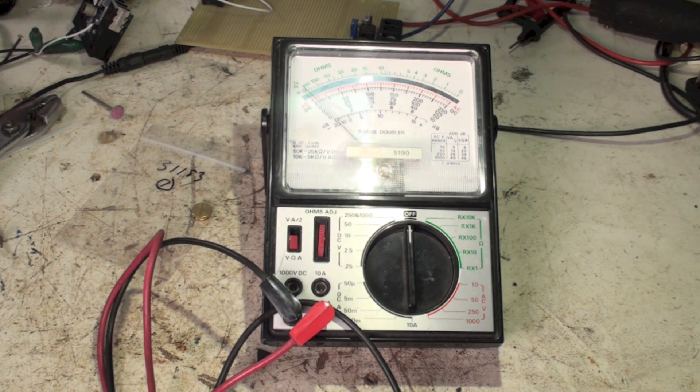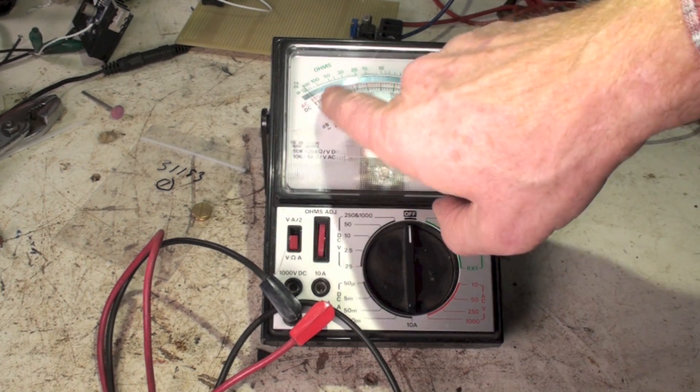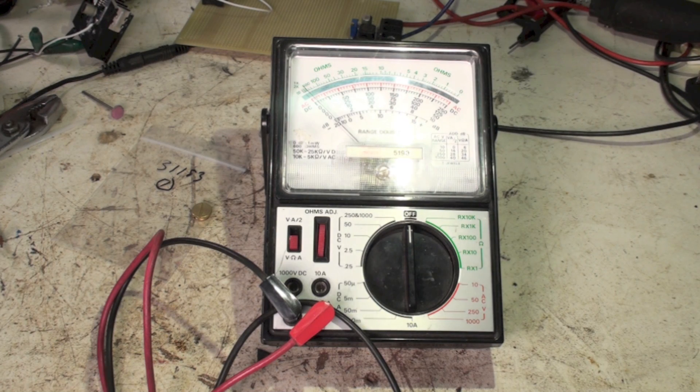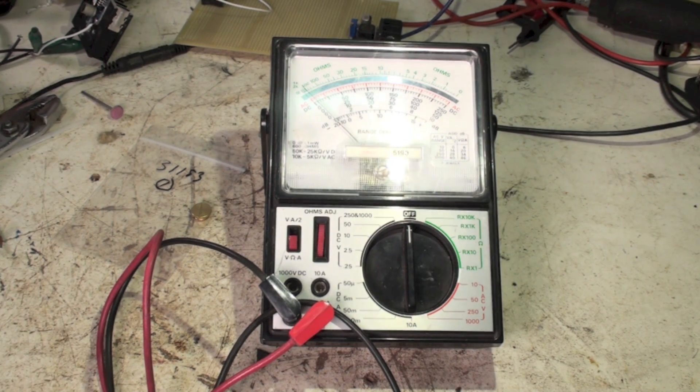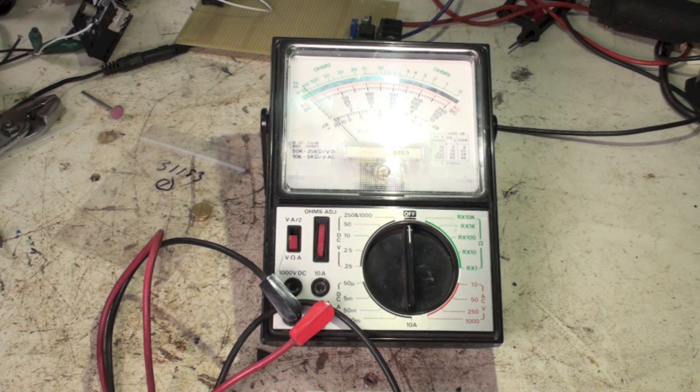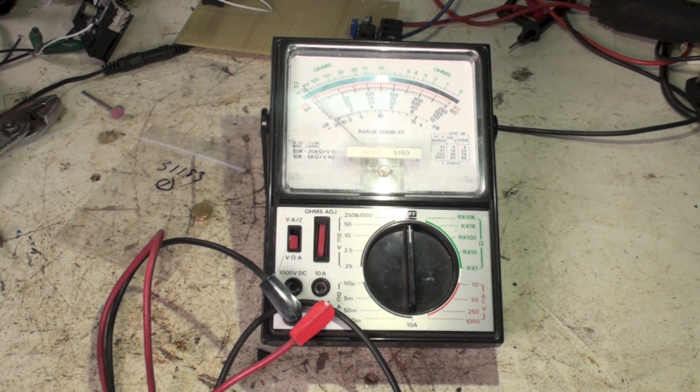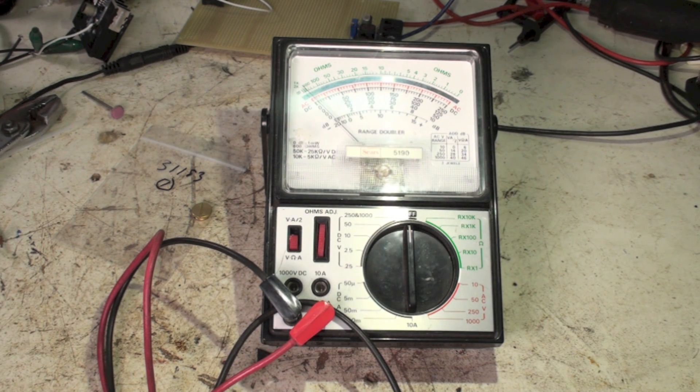But they have a needle. And this needle moves back and forth, depending on the amount of voltage read through the probes. Well, what makes a needle move? And that's kind of basic to how voltmeters work. So let's see if we can figure out how that needle actually moves.